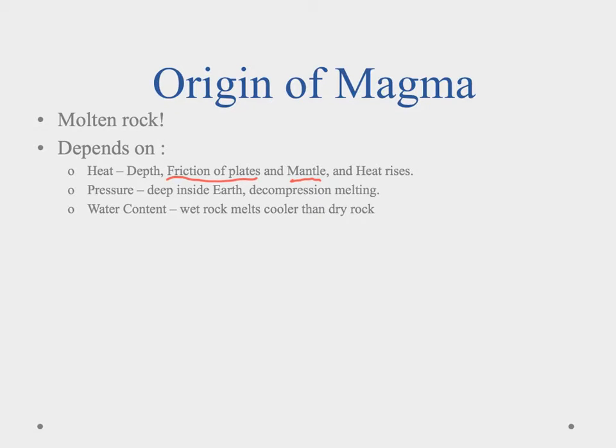Okay, we also have pressure and pressure is going to be a little more interesting. The deeper inside of the earth we get more pressure, and that pressure can kind of squeeze rock together and keep it from melting. It'll keep the pieces close together. When we release that pressure we get what we call decompression melting.